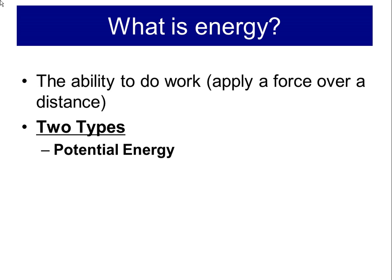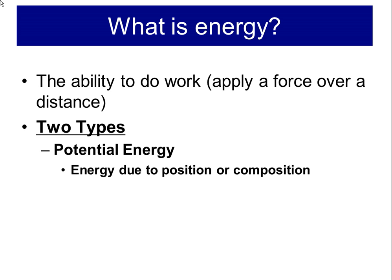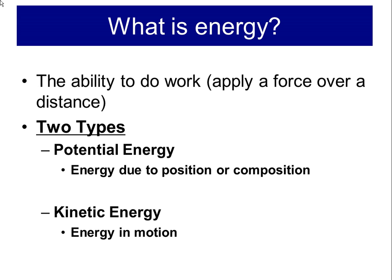The first types of energy we're going to talk about: one is potential energy. Potential energy is energy due to position or composition. For example, if I hold up a book at about eye level, when this book is not moving, gravity is pulling down on it, but this book has high potential energy because it's not moving — that's energy due to position. Energy due to composition has to do with energy that's in bonds, such as chemical bonds and intermolecular forces. When I drop the book, that potential energy becomes kinetic energy — energy in motion.